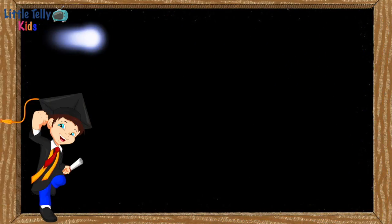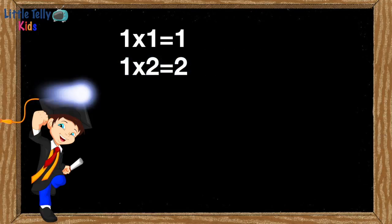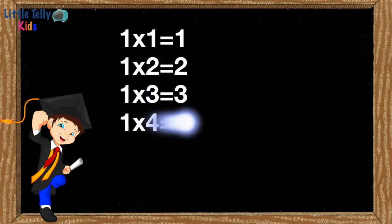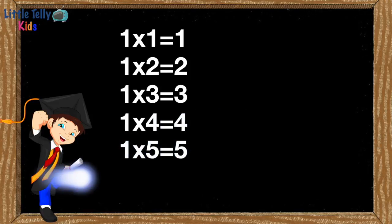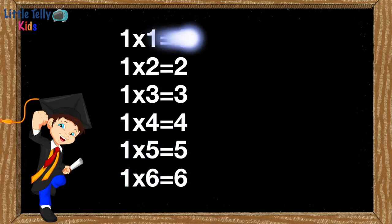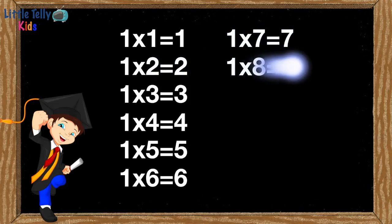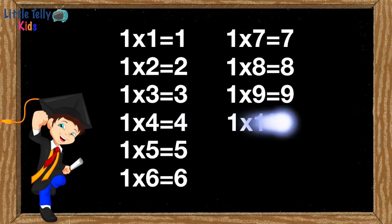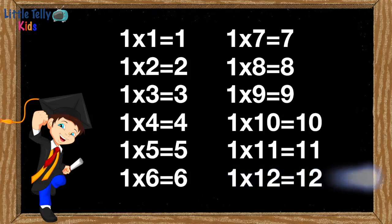1 1s are 1, 1 2s are 2, 1 3s are 3, 1 4s are 4, 1 5s are 5, 1 6s are 6, 1 7s are 7, 1 8s are 8, 1 9s are 9, 1 10s are 10, 1 11s are 11, 1 12s are 12.